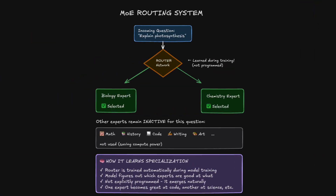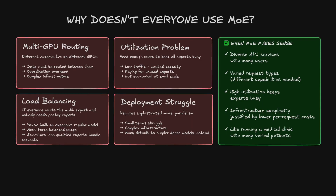You get the knowledge of a massive model with the running cost of a smaller one. The routing system that decides which experts to use is learned automatically during training — the model figures out which experts are good at what without being explicitly programmed. This specialization emerges naturally: one expert might become great at writing code, another at answering science questions, and another at creative writing. So why doesn't everyone use Mixture of Experts? The operational complexity is significant. Different experts often live on different GPUs, so information needs to be routed between them — it's like running a company where departments are in different buildings and coordination becomes challenging.